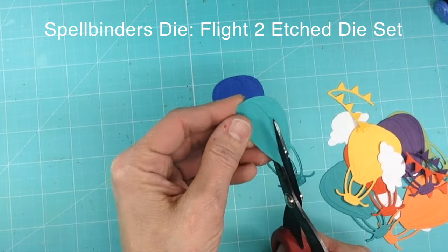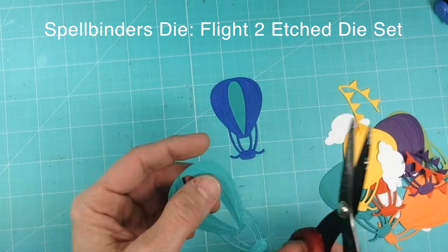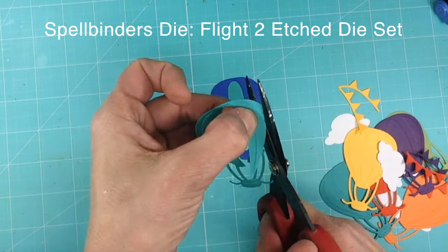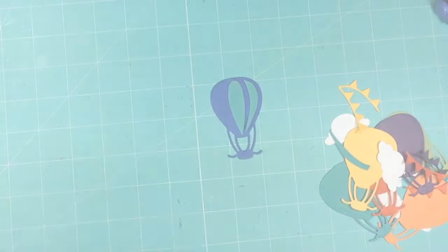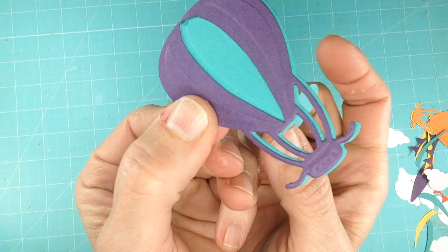I embellished some of the balloons by mixing and matching colors. As you can see, I'm cutting up the balloon pieces and using them as accents. On this next balloon, I doubled up and glued two balloon shapes together to create some visual depth.